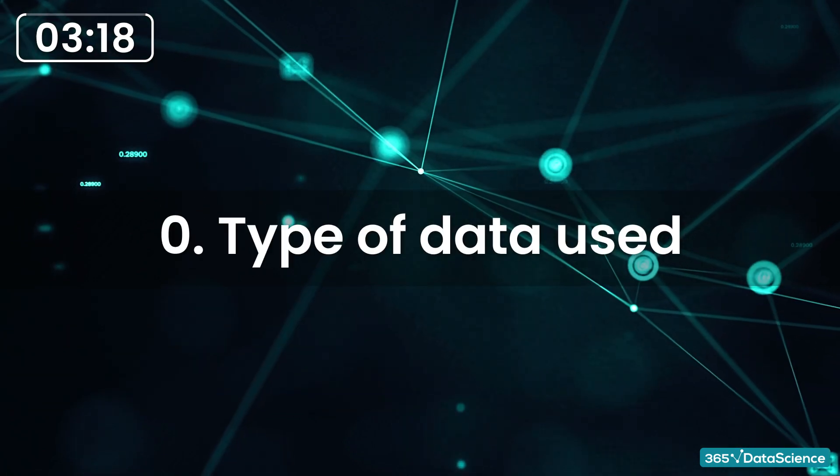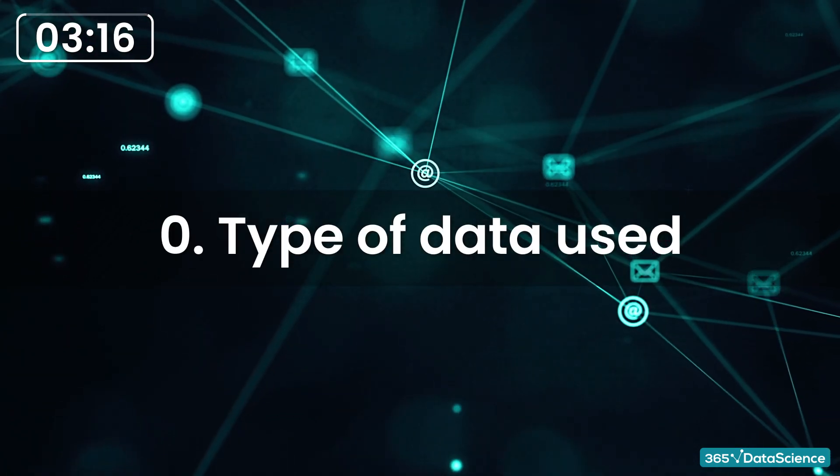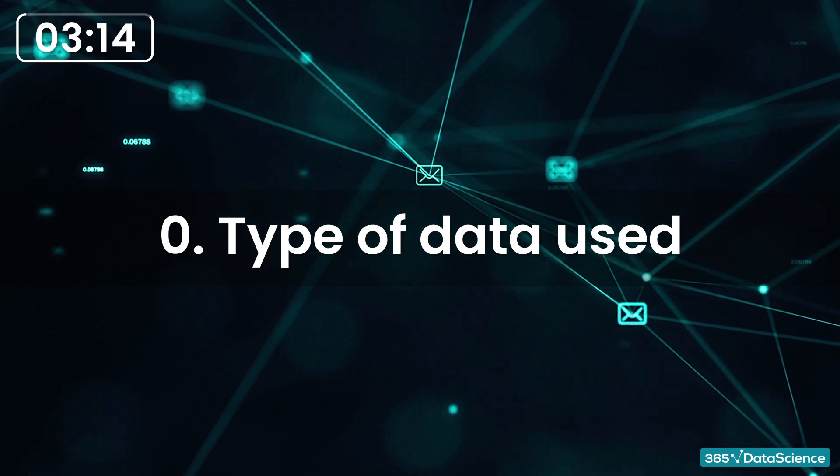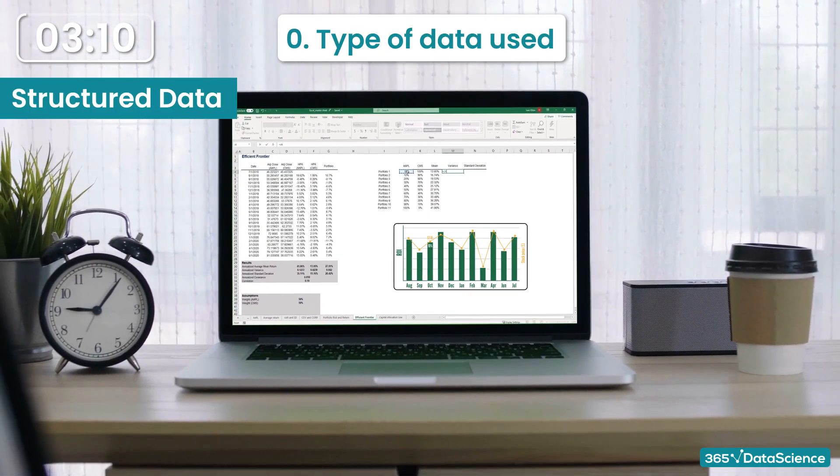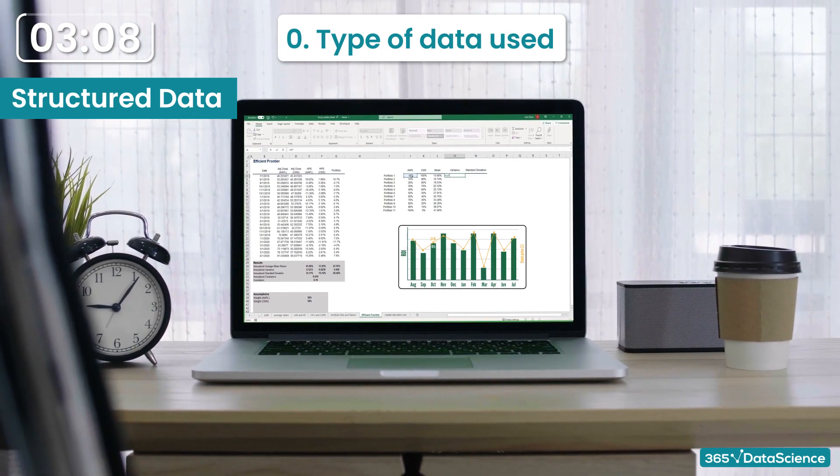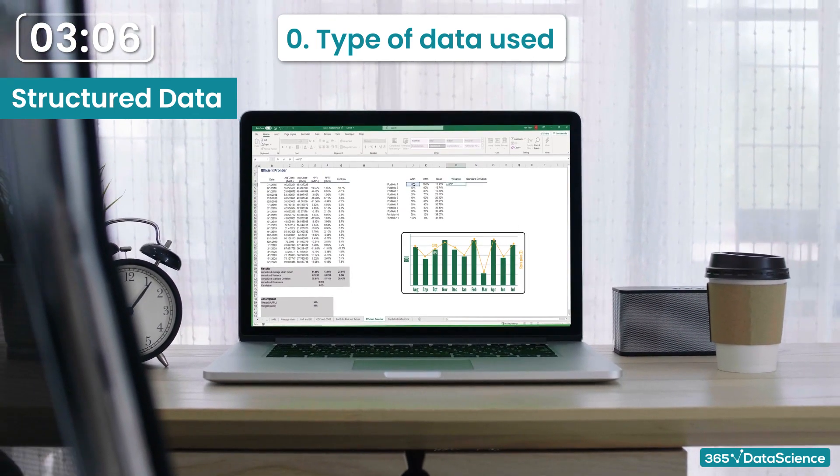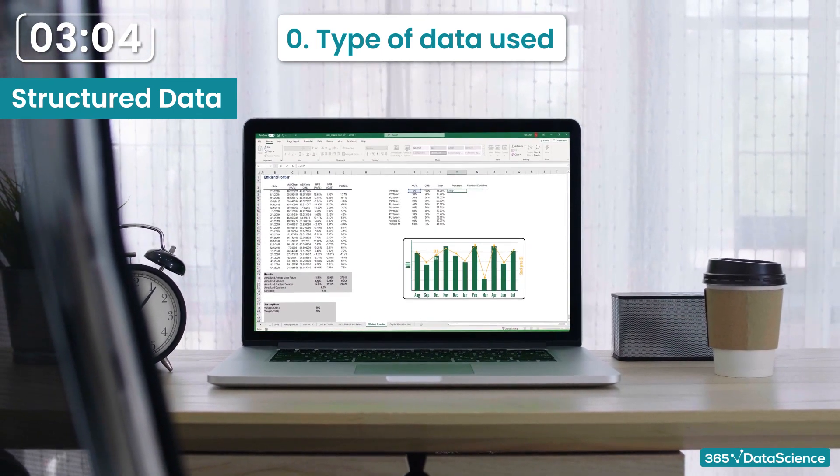What type of data do data scientists use in their analysis? The answer is both structured and unstructured data. Structured data comes in the form of Excel spreadsheets and CSV files. To put it briefly, it can be organized in rows and columns. Examples of such data are client tables and spreadsheets with transaction information.